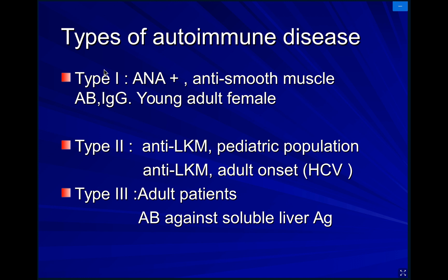The third type is an adult patient. The antibody which occurs in this type of immune liver disease is the soluble liver antigen and antibody for this antigen.